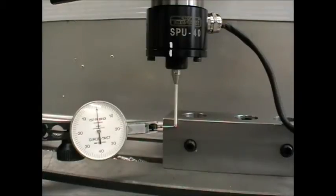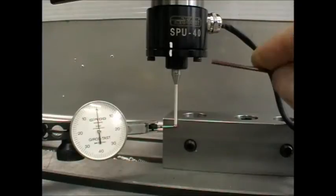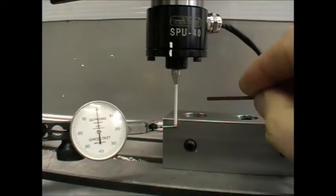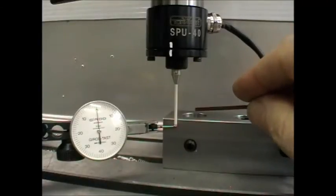Of course, this doesn't matter so much when you're using the probe to find the center of the work, because you're touching on one side and you're touching on the other side, and you're just finding the central position. So those errors, theoretically, will be balanced on each side.